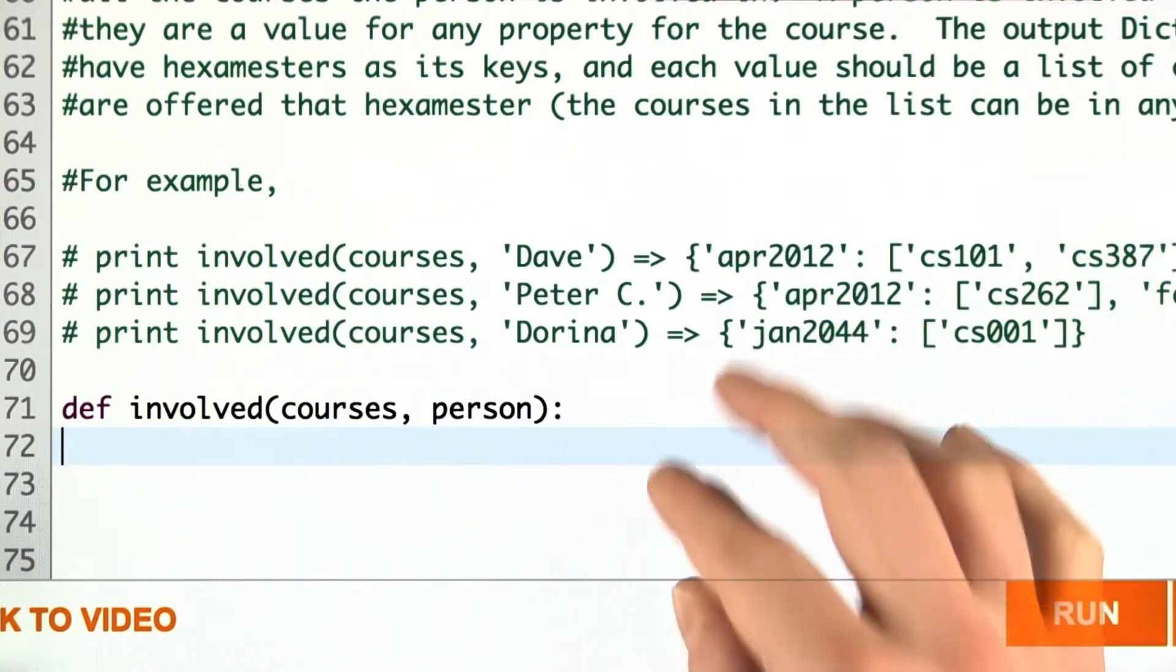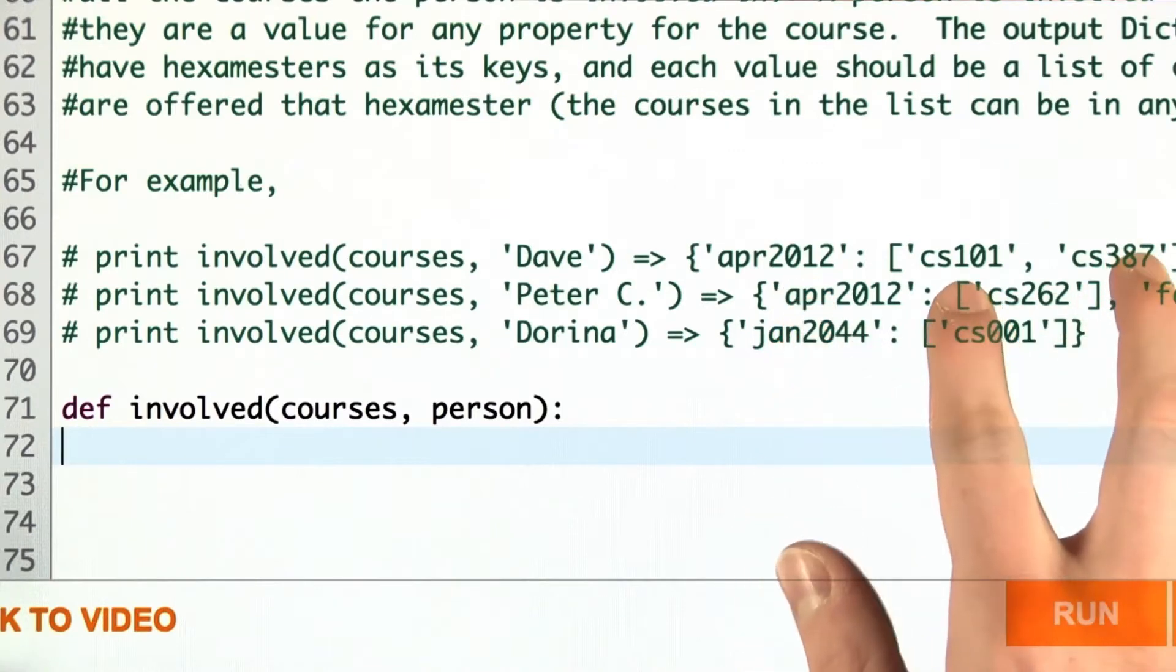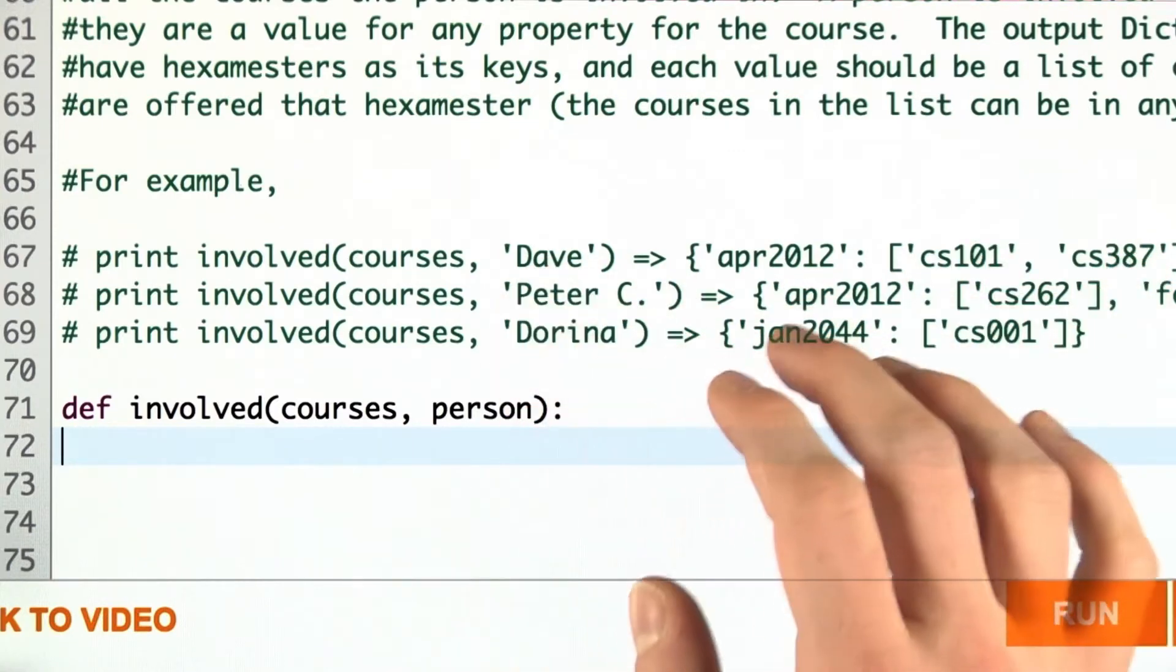And the dictionary continues on, but the structure stays the same, where the key is the hexamester and the value is a list of courses for which that person is involved.